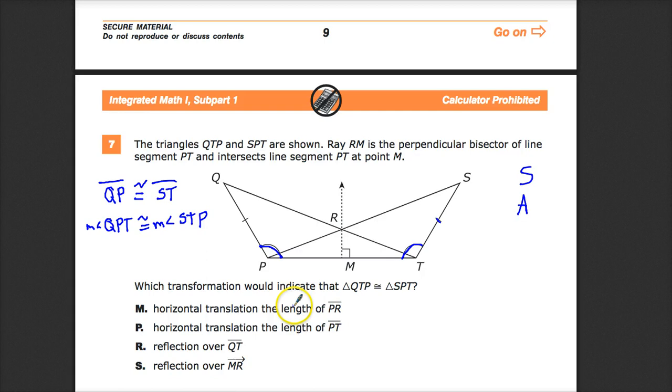A horizontal translation the length of PR means it goes this way, so this moves over here. I'm not really sure how that would help us. A horizontal translation the length of PT, I go from here to here. It would look pretty, I guess, but I'm not 100% sure that it really adds anything. I'm going to say that translations are not very helpful here.